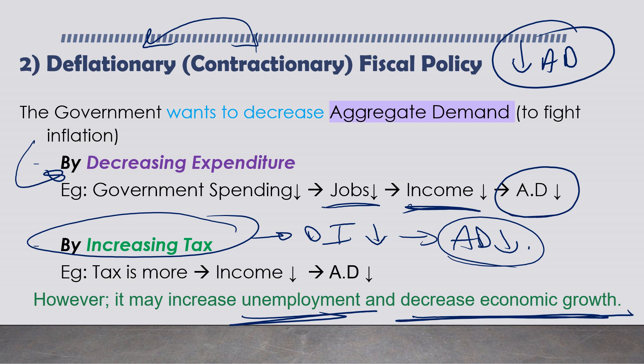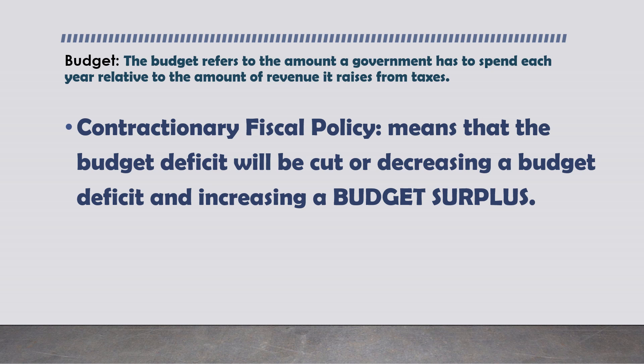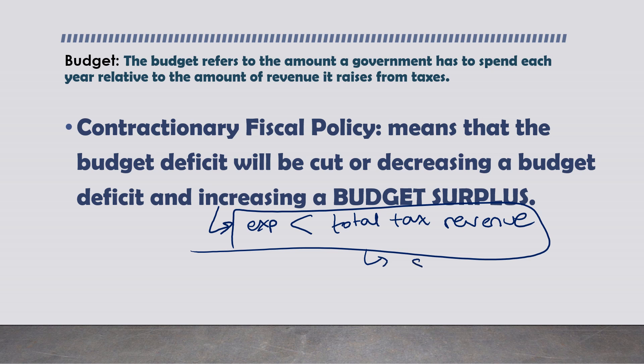When the government tries to fight inflation, it might create unemployment and decrease economic growth - the government is fixing one problem but this may lead to another. A contractionary fiscal policy means cutting or decreasing a budget deficit and increasing a budget surplus, because if public expenditure is less than total tax revenue, there will be a budget surplus.